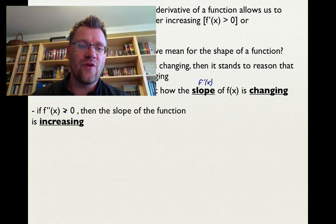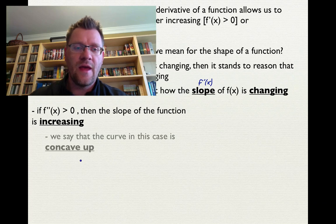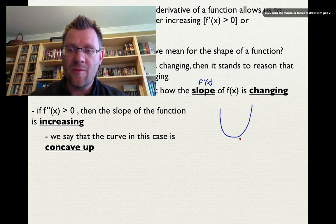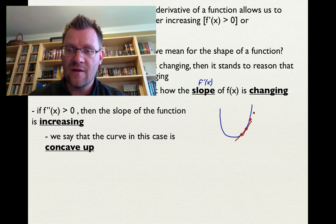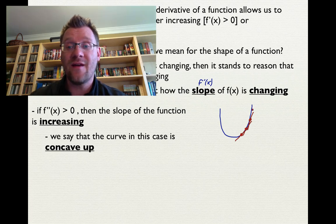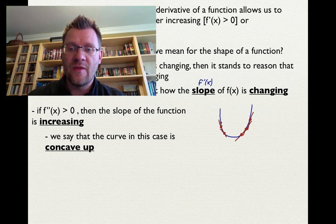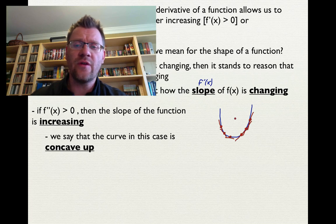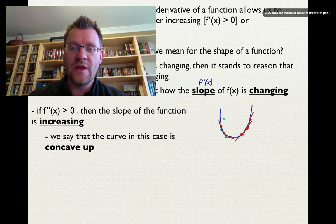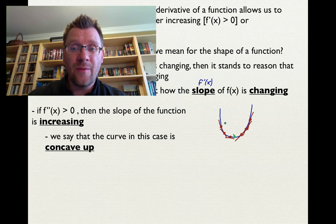If f double prime x is greater than zero, then the slope of the function is increasing, and we say that this curve is concave up. Looking at a parabola as an example: as you go along this shape, the slope of the tangent line is getting steeper, meaning the first derivative is increasing. This happens on both sides of the parabola — on the left side the slope is negative but becoming less negative. So this is a concave up shape, and it can have both a decreasing and an increasing part.